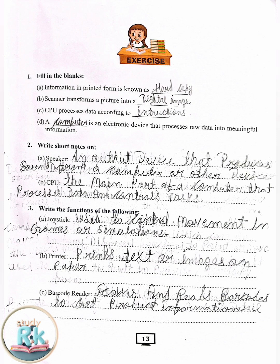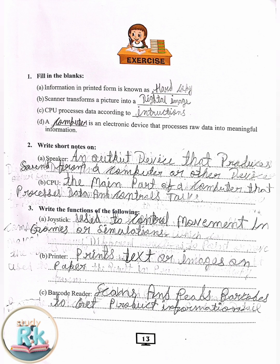2. Write short notes on. A. Speaker — an output device that produces sound from a computer or other device. B. CPU — the main part of a computer that processes data and controls tasks.